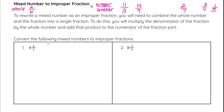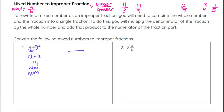We're going to convert mixed numbers to improper fractions. For 4 and 2 thirds: the whole number 4 multiplied by the denominator 3 gives us 12. Then we add the numerator 2, giving us 14. That 14 is the new numerator. The denominator stays the same — that 3. So 14 over 3 is the same as 4 and 2 thirds.